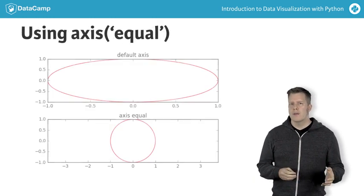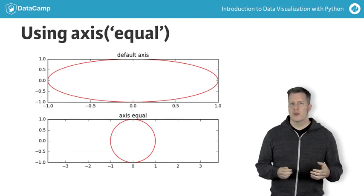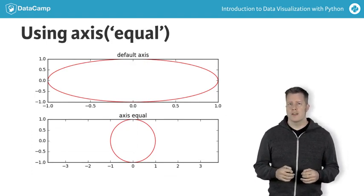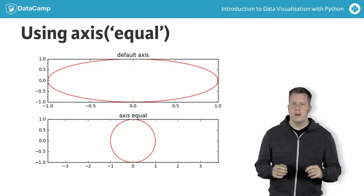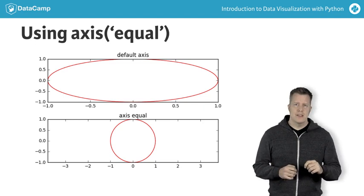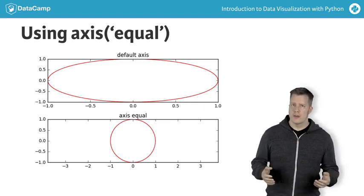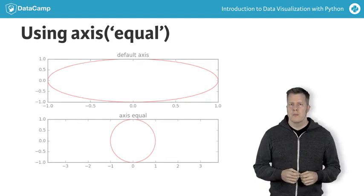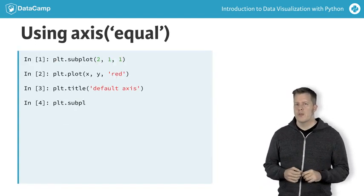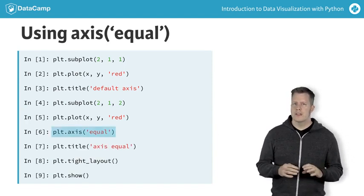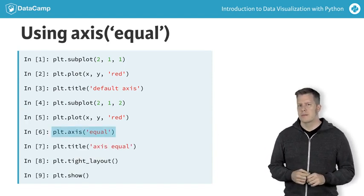For example, here is a view of a circle in two subplots. The top plot uses the default axis scaling. The bottom plot uses axis equal to ensure that the circle is actually drawn as a circle. This is the code that produced the preceding figure — it's the use of axis equal that sets the scaling.